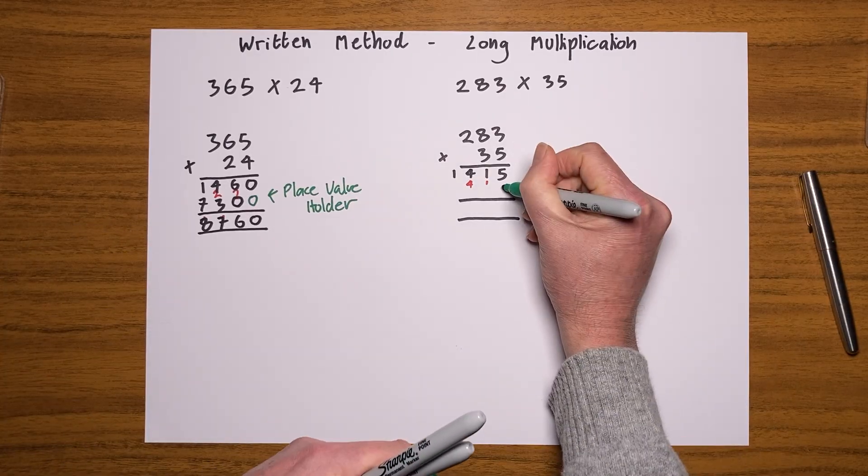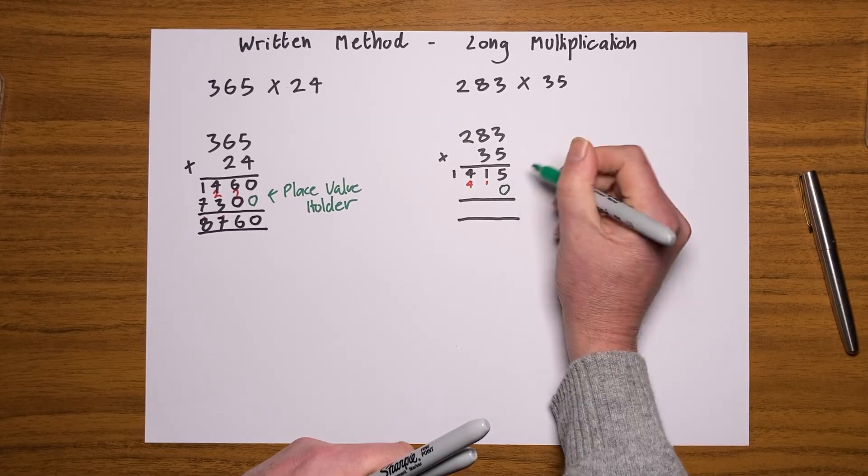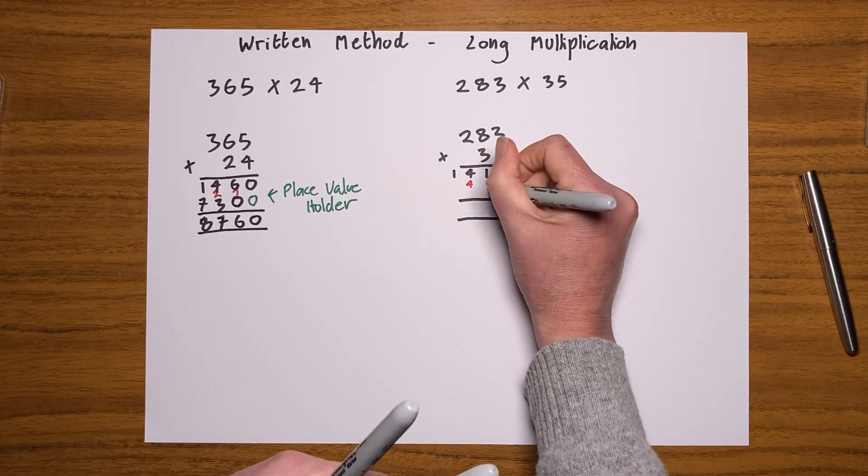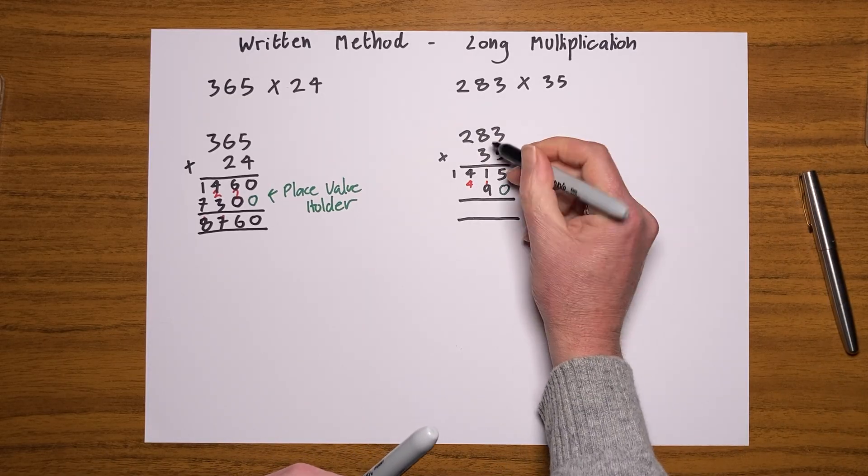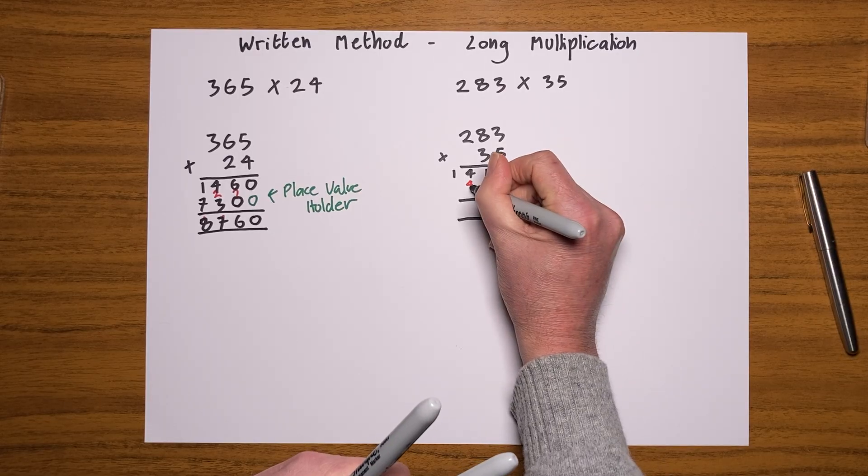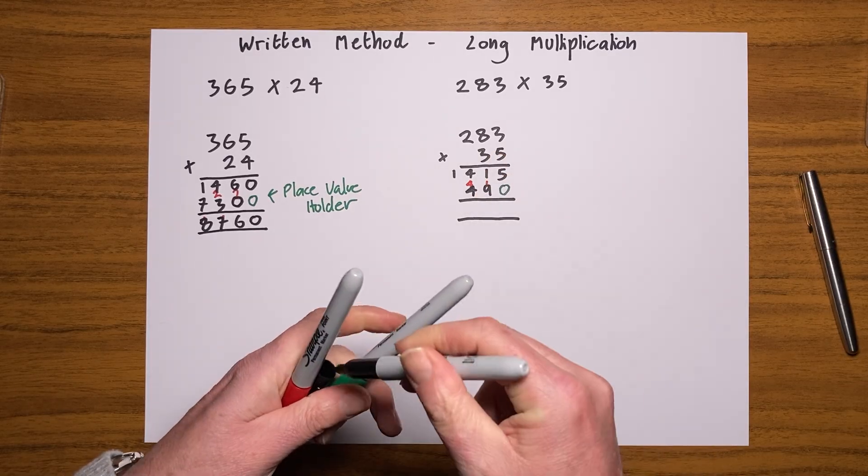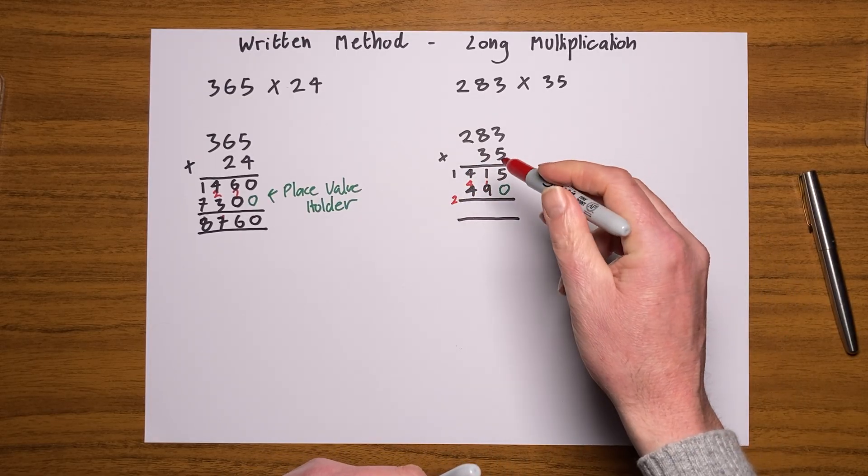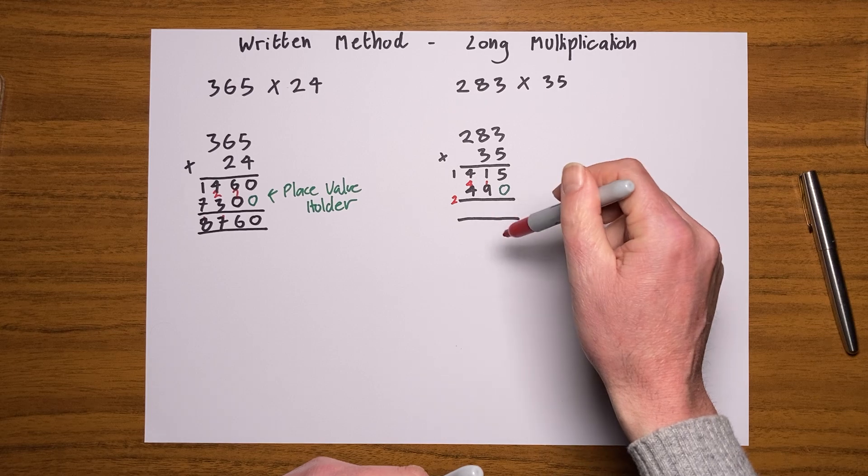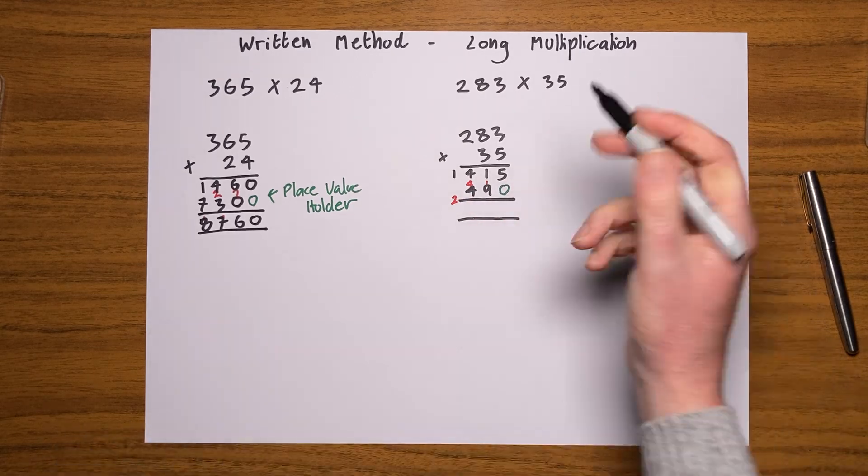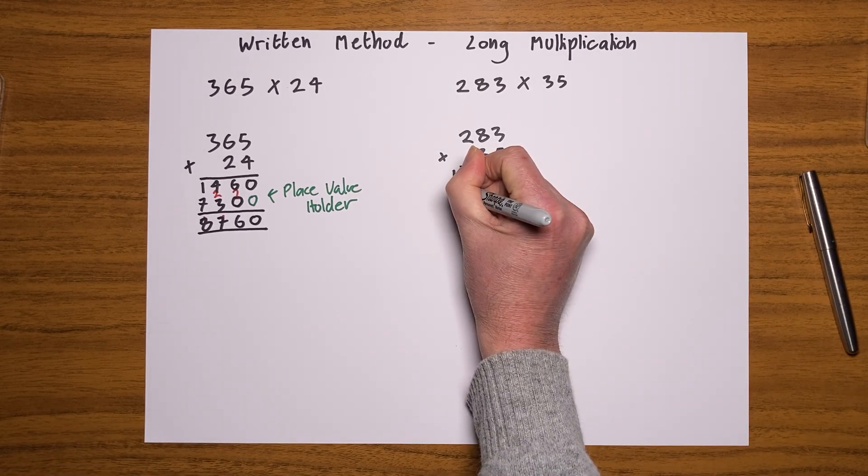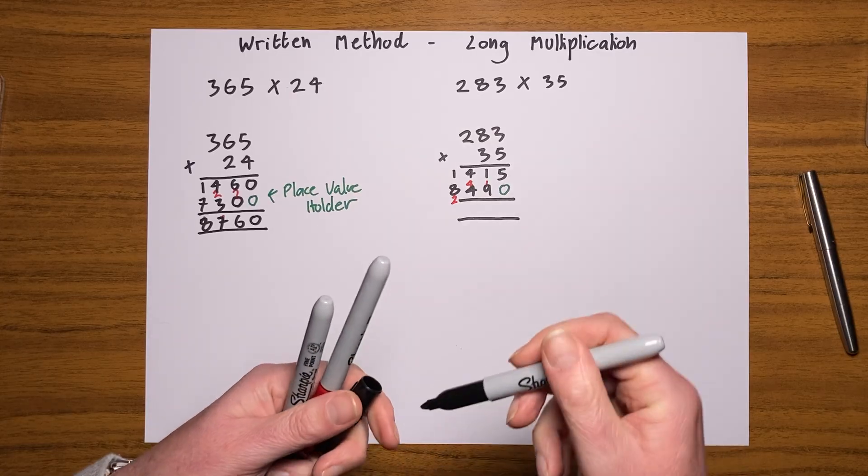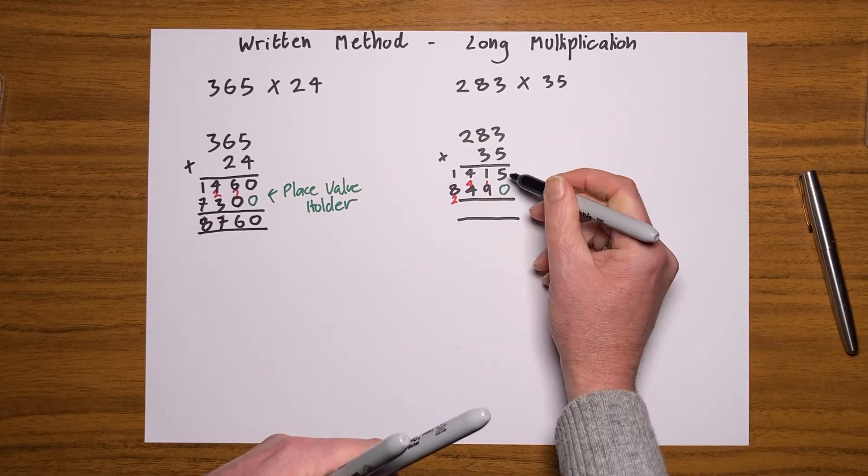Now the next thing you need to do is put your zero in underneath here, the place value holder. That's important. If you get that, you're going to get it all wrong. Now we're going to go for three threes are nine, so I shall write that here. Eight threes are 24. I'll put the four in here and carry the 20, and then I'm going to go for two threes are six, add that two is eight.